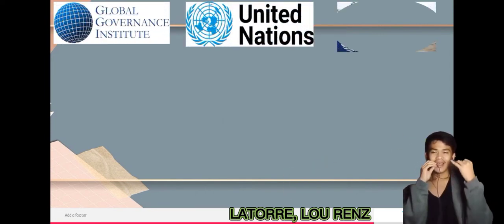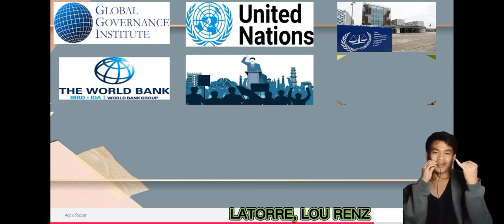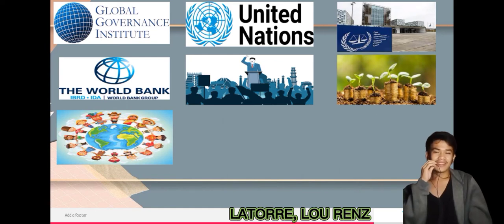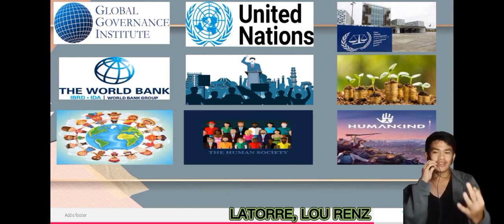It tends to involve institutionalization. Institutions of global governance include the United Nations, the International Criminal Court, the World Bank, and others. These institutions tend to have limited and demarcated power to enforce compliance. The modern question of world governance exists in the context of globalization and globalizing regimes of power — politically, economically, and culturally — in response to the acceleration of interdependence on a worldwide scale, both between human societies and between humankind and the biosphere.